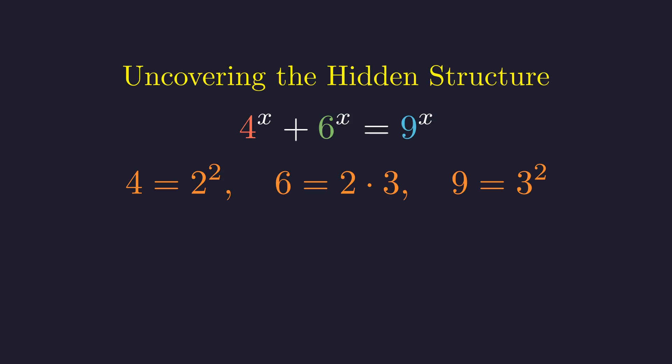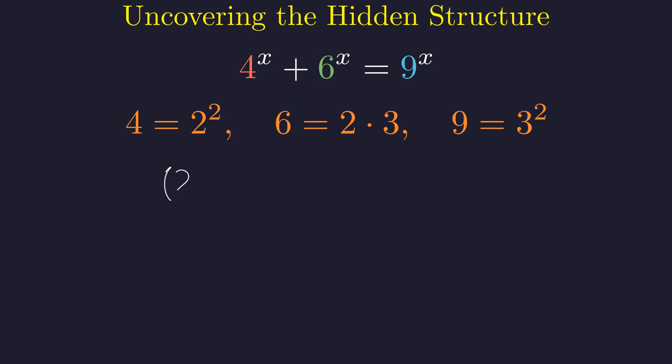Writing out these relationships makes the pattern clear. Our three bases are all related to the prime numbers 2 and 3. This suggests we should rewrite our equation using these fundamental building blocks. Since both 2 and 3 are positive, we can apply exponent rules for any real value of x. Let's rewrite the equation using these prime factors.